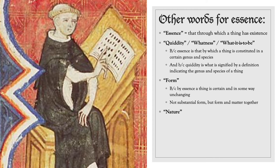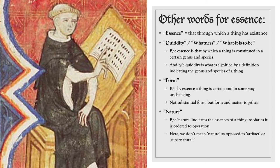Another word that means the same thing as essence, and which is used quite frequently interchangeably with essence in this book, is 'nature'. That's because nature indicates the essence of a thing insofar as it is ordered to operation. Here we do not mean nature as opposed to artifact or supernatural, but rather nature in a broad sense, such that even angels, which are not natural things in the strict sense, and even God, who is a supernatural thing, can be said to have a nature.